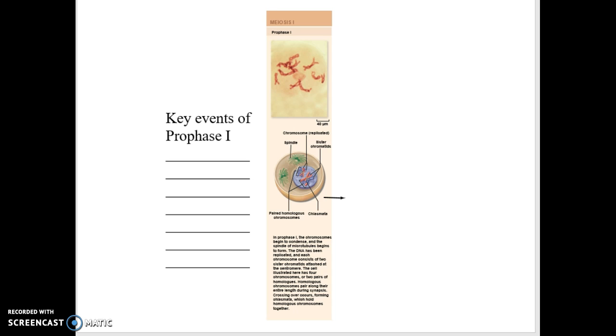There is also the most critical event of our lives occurs in our parents during prophase 1. It is a thing called crossing over. So let's give it some hashtag.